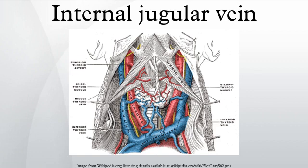The internal jugular vein is a paired vein collecting the blood from the brain, the superficial parts of the face, and the neck. The internal jugular vein is a type of jugular vein.